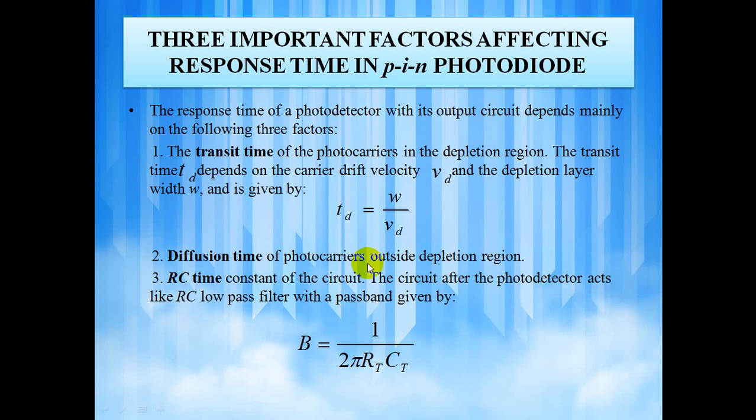Three important factors affecting the response time in PIN photodiode are the transit time of the photocarriers in the depletion region. The transit time Td depends on the carrier drift velocity Vd and the depletion layer width W and is given by W by Vd. Diffusion time of the photocarriers outside the depletion region. And third is the RC time constant of the circuit. The circuit after the photodetector acts like RC low-pass filter with the pass band given by 1 by twice by RTCT.